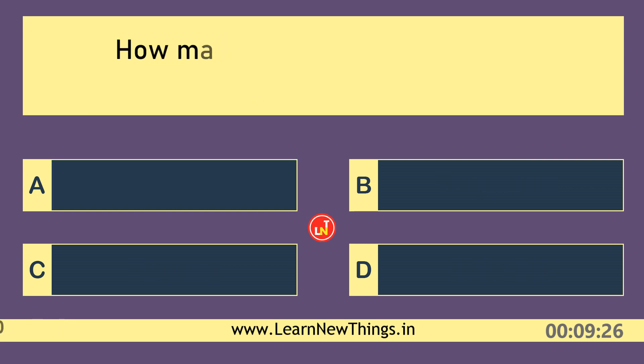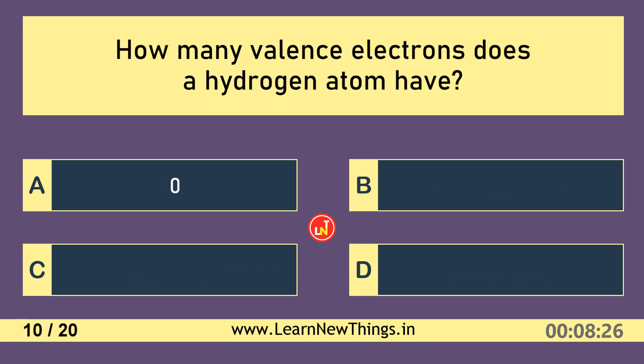How many valence electrons does a hydrogen atom have? One.